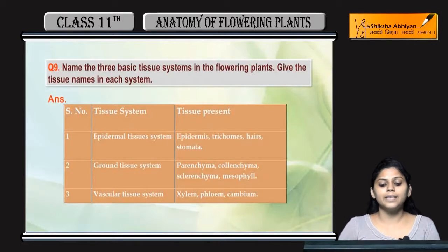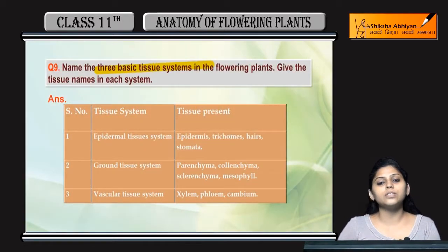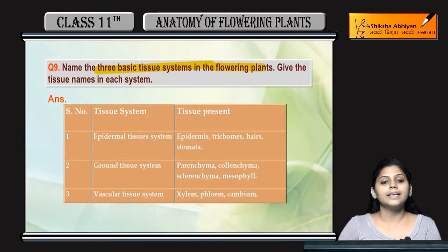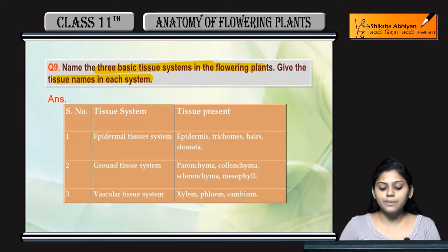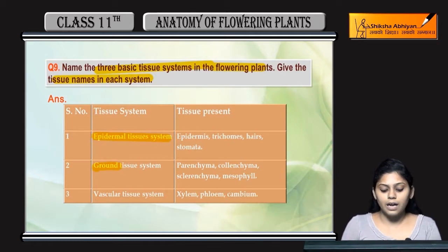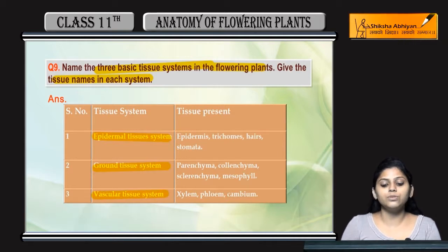Question number 9: Name the three basic tissue systems in flowering plants and give the tissue name in each system. The three tissue systems in flowering plants are: epidermal tissue system, ground tissue system, and vascular tissue system.